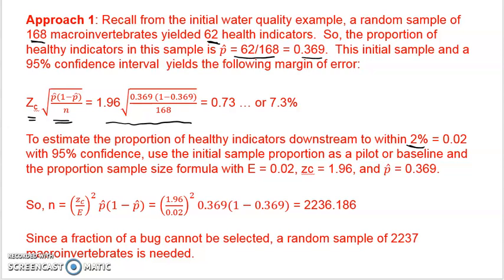For that, again, we're going to use the sample size for the proportion formula. Only instead of assuming we have no information, we're going to use our prior information. We know from this initial sample that an estimate of our proportion is 0.369, so we're going to use that as a pilot or baseline data.